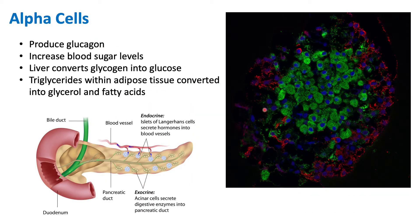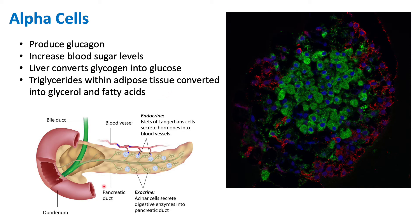Alpha cells are highlighted in red in the diagram, beta cells in green, and blue refers to the nuclei of all the cells. Alpha cells are responsible for producing glucagon. Glucagon is produced when blood glucose levels are very low — for example, when we haven't eaten in a long time. The body needs glucose to carry out cellular processes, so when blood glucose drops, the alpha cells release glucagon into the bloodstream.